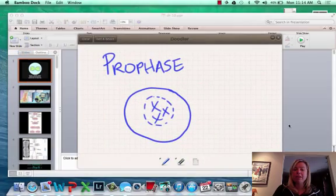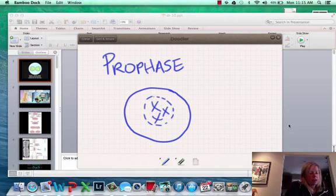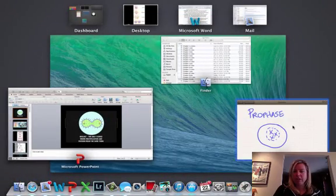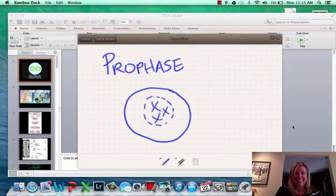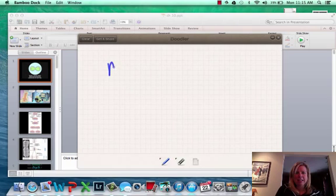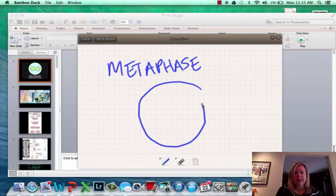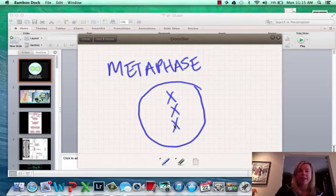Now, if I was going to ask you to draw metaphase, this is how it would look. So the next phase is metaphase. And so what's going to happen with that is you're going to have those chromosomes just lined up down the center. That's all you've got to draw for metaphase.